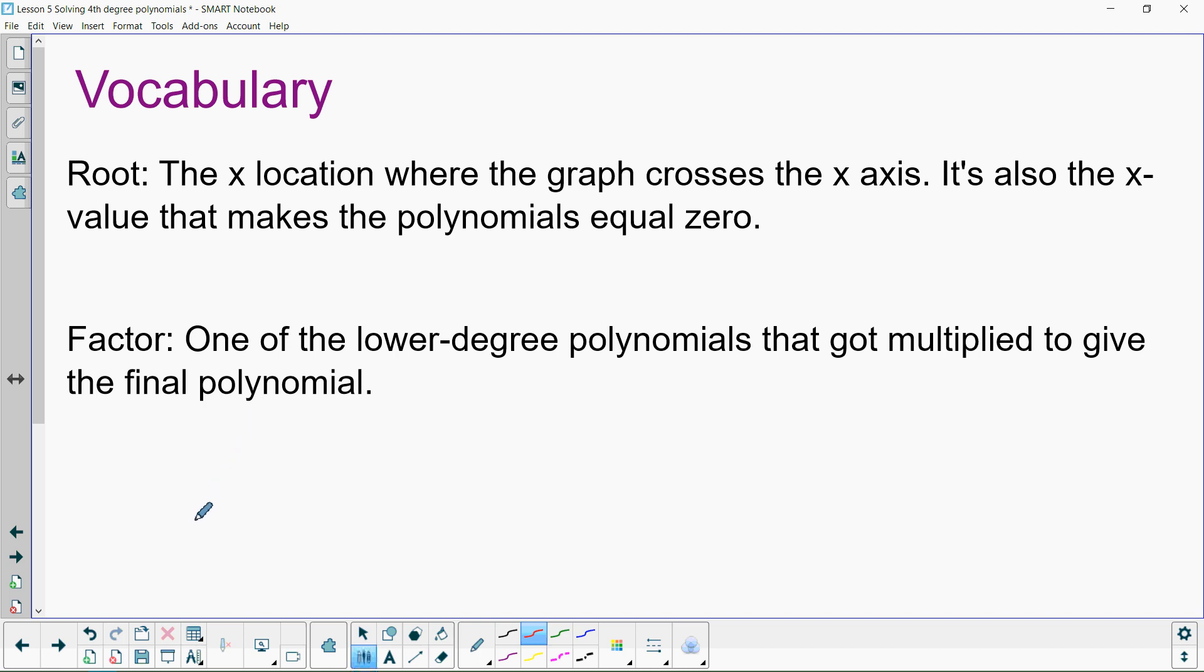Let's start with some vocabulary just to make sure you're up to speed on the words I'm saying. A root is the x location where the graph crosses the x-axis. It's also the x value that makes the polynomial equal to 0. This is a fancy way of saying if I graph a graph, it's these spots right there where the graph crosses the x-axis. The root, we only really care about the x location though. So it would be like x equals and then a number. Maybe a couple numbers, right? x equals number 2. So we might have several, like three in this one.